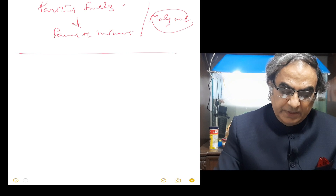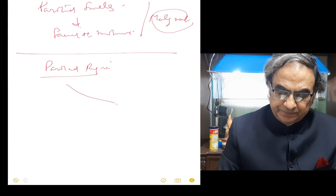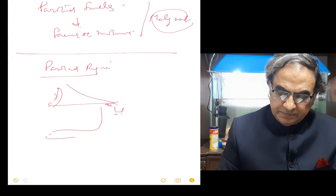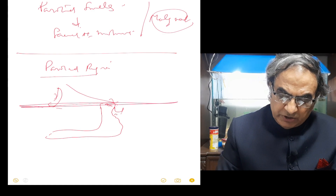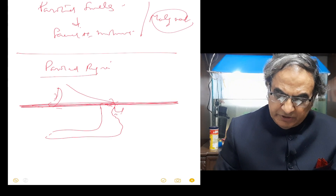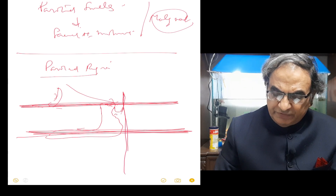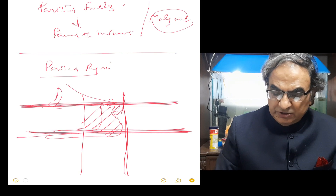Now, if I can draw it for you: that's the mastoid, that's the zygomatic process, and that's the mandible. We draw two horizontal lines — one across the zygomatic process and the other across the angle of the mandible. Then one vertical line from the mastoid process downwards, and another from the midpoint of the zygomatic process. So you get this square-ish region called the parotid region.